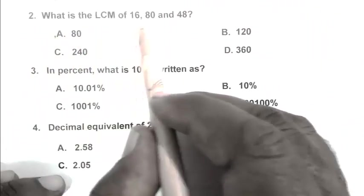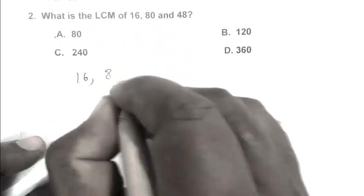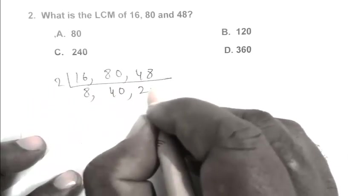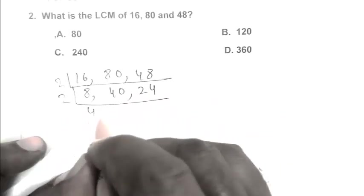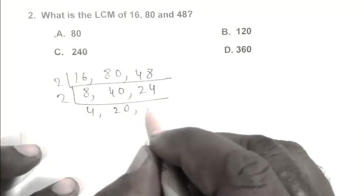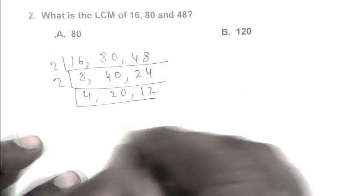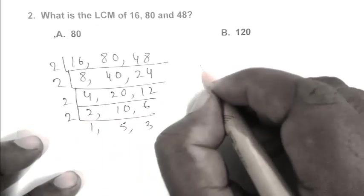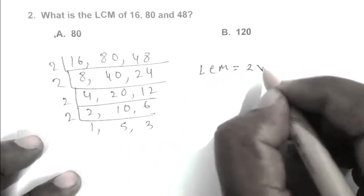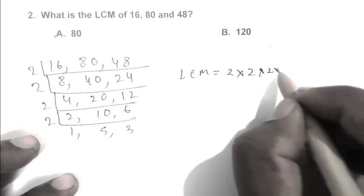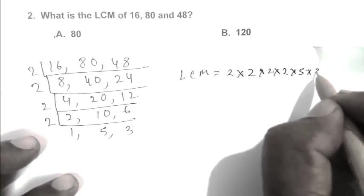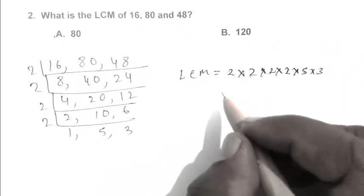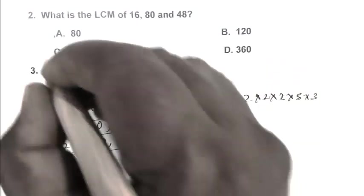Question number 2. What is the LCM of 16, 80 and 48? Dividing by 2: we get 8, 40, 24. Again by 2: 4, 20, 12. Again by 2: 2, 10, 6. Again by 2: 1, 5, 3. So the LCM is 2×2×2×2×5×3 = 240. C is the right answer.